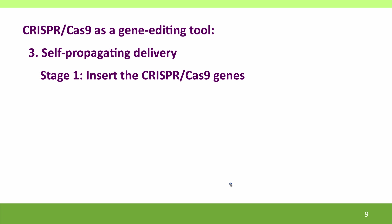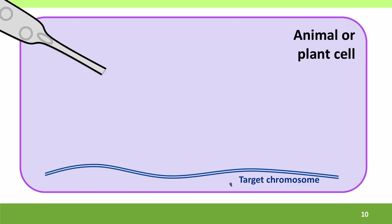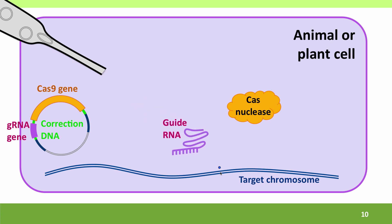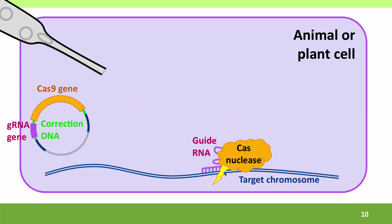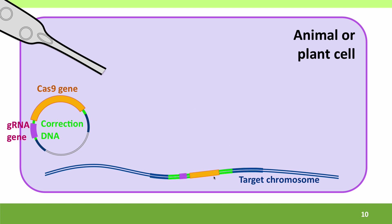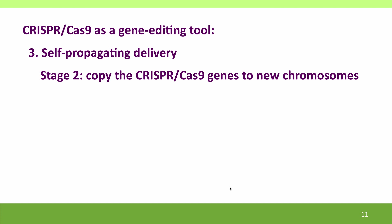An even more elegant system does away with the separate correction DNA by having the plasmid itself also take on the function of the correction DNA. The plasmid encodes the guide RNA and the Cas9 nuclease, targets the precise position in the DNA and cuts it, and now the plasmid itself serves as the correction DNA. Because the plasmid has been engineered to have sequences identical to the flanking regions of the cut site, it can itself be the substrate for recombinational repair. The result is that the Cas9 gene and guide RNA gene are now inserted into the chromosome at the site of the cut.